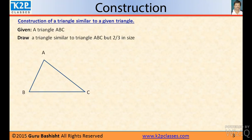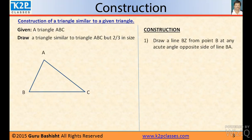Now, construction of a triangle similar to a given triangle. A triangle ABC is given and we have to draw a similar triangle to triangle ABC but two-thirds in size. Two-thirds means smaller than the given triangle.